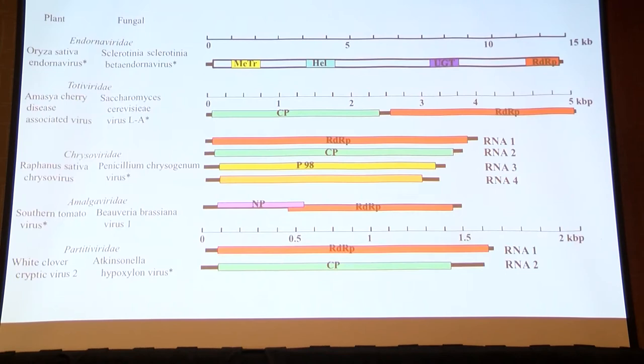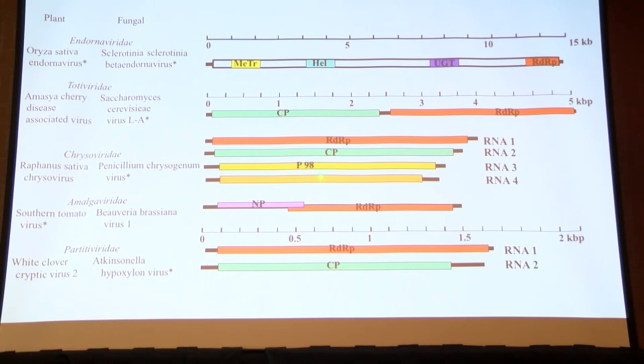Their families also have members in endophytic fungi, so they're also very common in crop plants — you had some for lunch today if you ate any salads. These are some of the genome organizations. The Endornaviridae are really large — 15 kb RNA viruses found as double-stranded replicative intermediates but likely single-stranded based on their RDRP. The Totiviridae and Partitiviridae are very simple — just an RDRP and coat protein. Chrysoviridae have up to four RNAs. Amalgaviridae have an RDRP and nuclear protein and don't seem to make true virus particles.